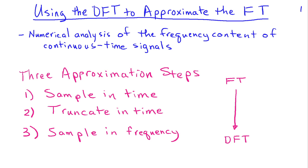The first step is we have to sample the signal in time, because we can't deal with a continuous signal in the computer. The second step is to truncate the signal in time, because we need a finite number of samples — we can't store an infinite number. And finally, in the frequency domain, we want something discrete, not a continuous function of frequency. So we're going to sample in frequency using the DFT.